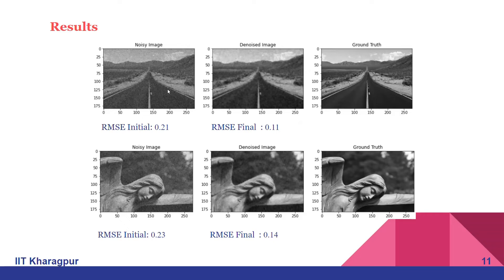RMS initial is the root mean square error which is compared to the noiseless image with the noisy image, and RMSE final is with the final denoised image.